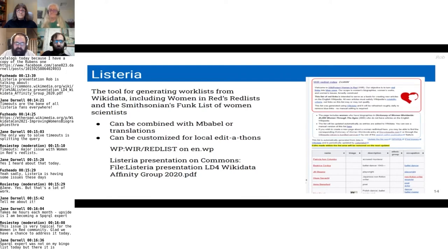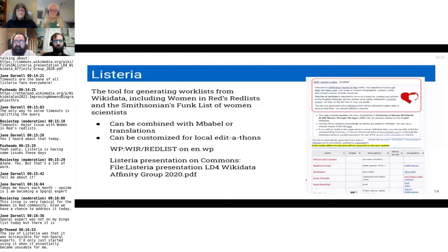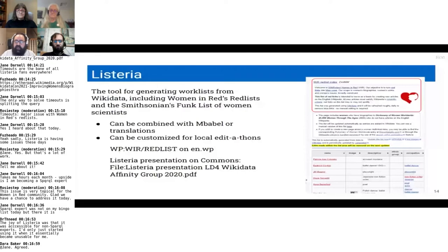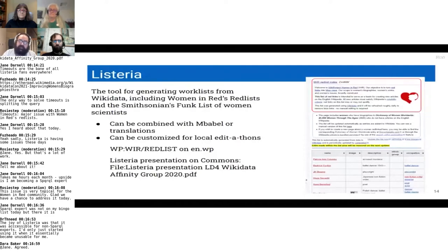The largest group of categories is occupations, like the cartoonists list. But there are also lists by country and lists from reference books. For reference book lists, I go in, make sure everyone's in Wikidata, put in a 'described by source' item for that reference book in each Wikidata item, and then we get a Listeria list. People can then go through and write articles for everyone in that reference book who doesn't have an article yet — and there's a source you can easily go to on the Internet Archive.